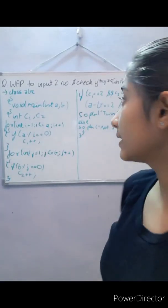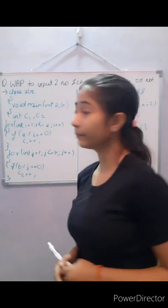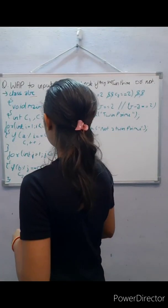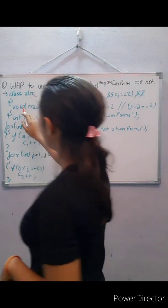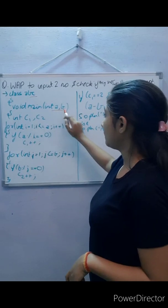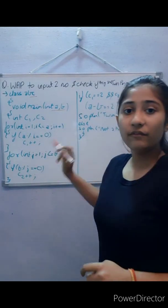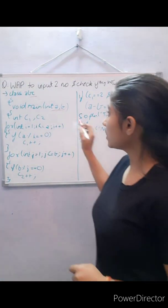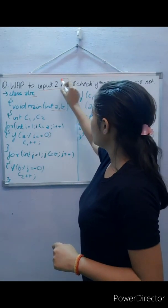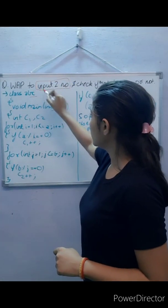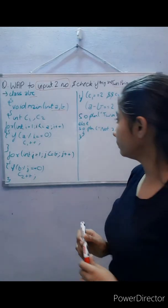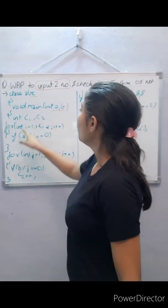So let's begin. We'll take any class name, for example ABC. Now in the void main method we are going to declare integer a and b. We are declaring them here because the program is asking the user to input two numbers to check whether they are twin prime or not.